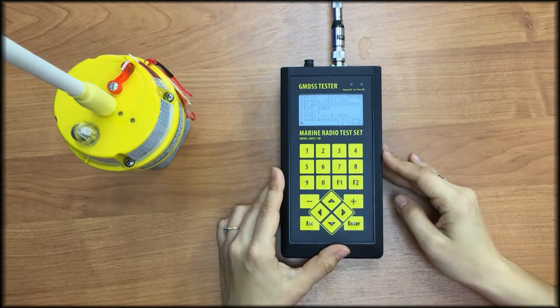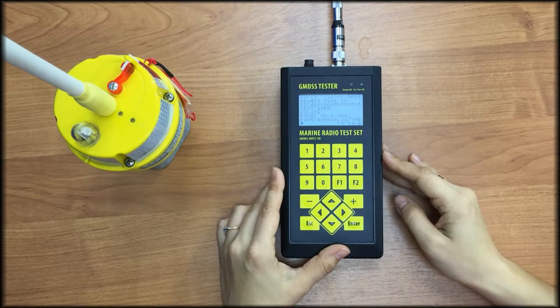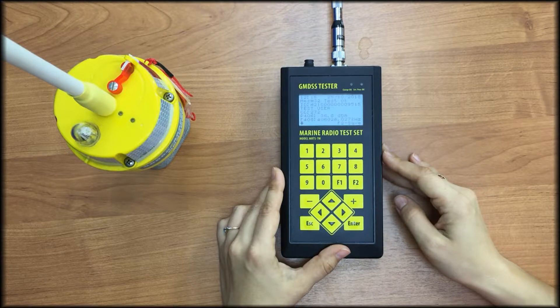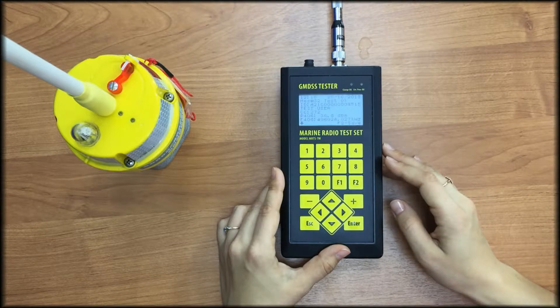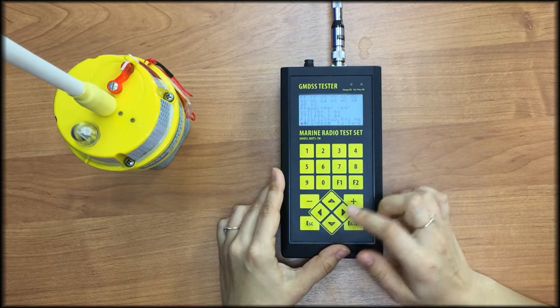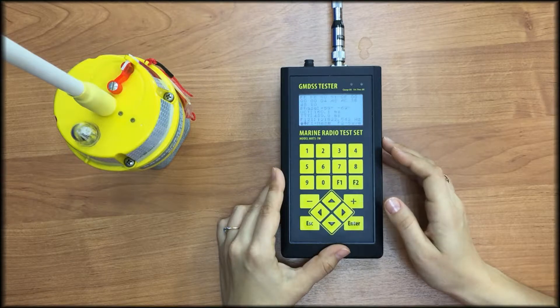On the MRTS-7M LCD, we see the decoded data of COSPAS-SARSAT message, beacon hex ID, protocol type, country code, power level in dBm, frequency in kHz, complete message content in hex format, phase deviation.